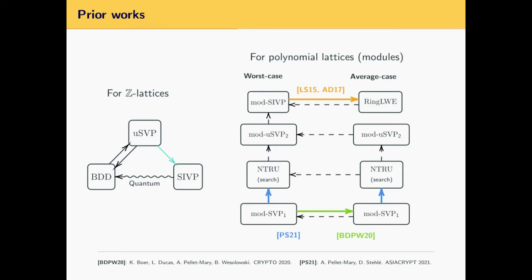This problem of finding short non-zero vectors in lattices with an exceptionally short vector is called the unique short vector problem. It has already been studied, and it is known to be equivalent to some other classical problems in lattice-based cryptography, such as bounded-distance decoding or the short independent vector problem, where the equivalence requires a quantum computer.